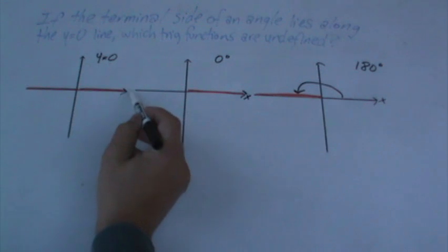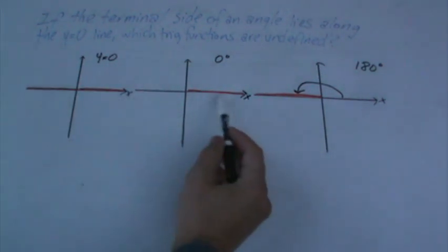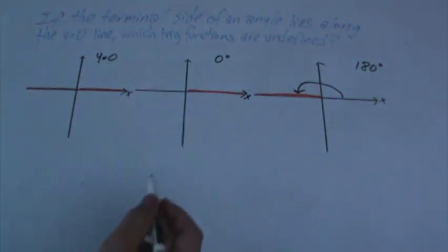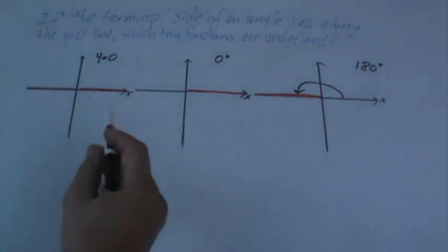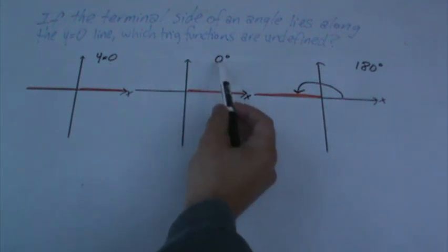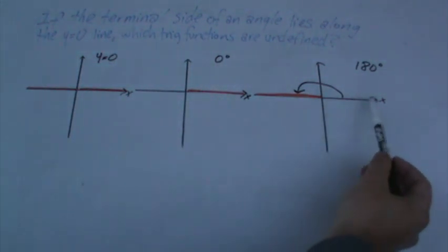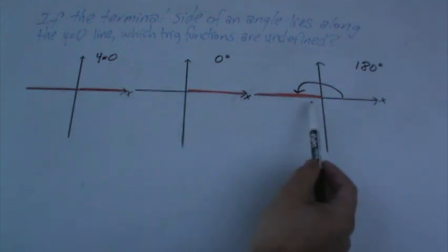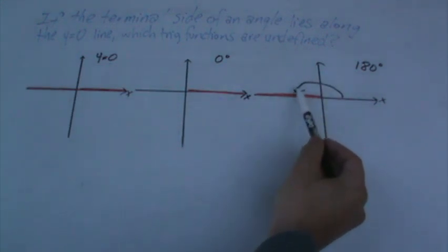So where do all functions start? The positive x-axis. So my terminal side has to end on the y equals 0 line. So here, if it starts here and it ends, and this is the terminal side, this is my angle, 0 degrees. Then the other one, if it starts here and it ends here, then you have our 180 degrees because it comes all the way on the other side.